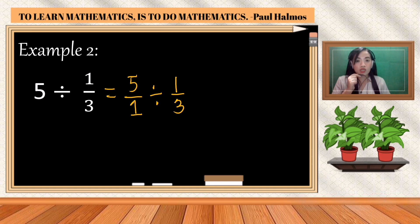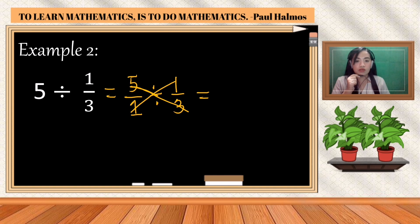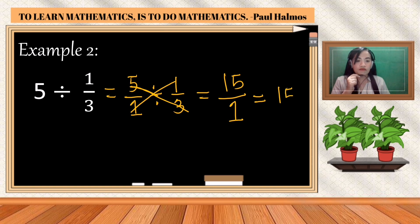Copy the operation which is division and copy the divisor, which is one-third. Do not get the reciprocal of the divisor if you are not using the long method. Using the short method — cross multiplication — five times three is fifteen, and one times one is one. Fifteen over one is equal to fifteen, so the final answer is 15.